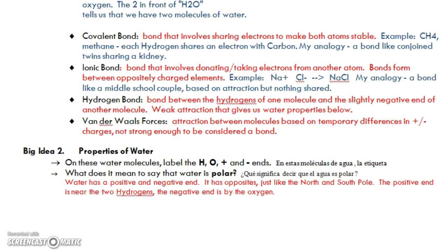Ionic bonds, you have a positive and negative charged element like sodium, which is positive, chloride, which is negative, and they're attracted to each other, and they're going to take electrons from one to make the other stable. So this is like a bond in middle school when you're a couple. It's based on attraction, but you're really not sharing anything vital, not like when you're sharing a liver or a kidney.